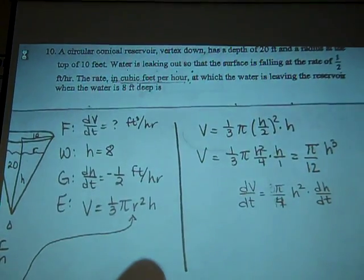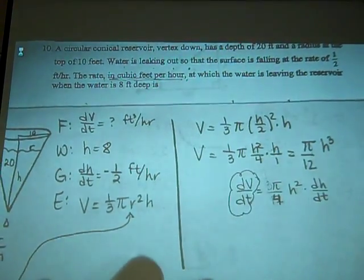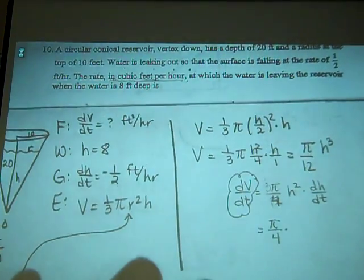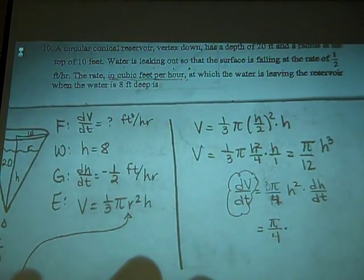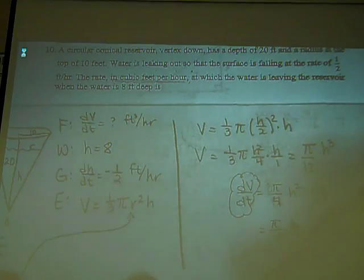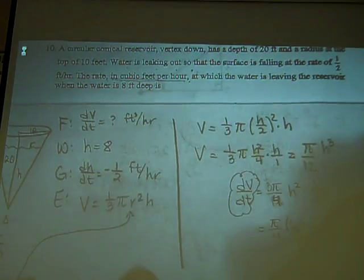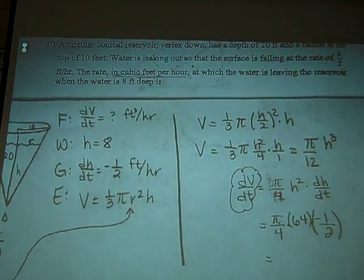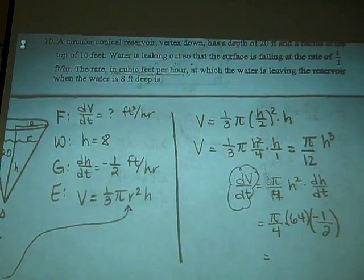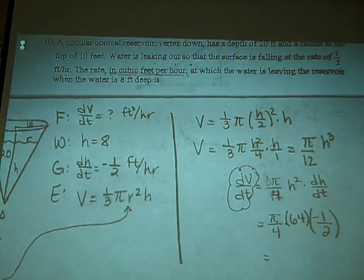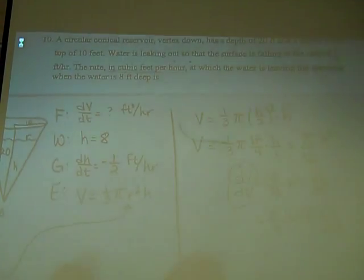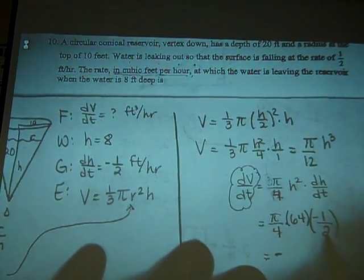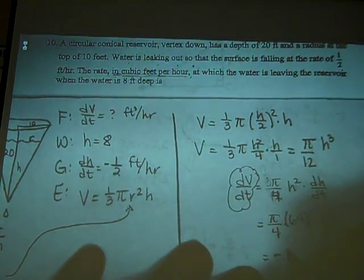What are we looking for? What is H? 8. So H squared is 64. And what was the dH/dt? Negative one-half. So without a calculator, clean that up for me. What is the answer going to be? Clearly negative. In the denominator we have 8, so 64 over 8 is 8. So the answer is negative 8 pi.